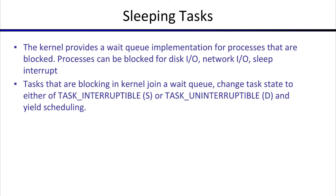You need to change your task state to task_interruptible or task_uninterruptible, depending on whether you're going into interruptible sleep or uninterruptible sleep. You also need to yield your scheduling at that point, and that'll take you out of the run queue and put you on a wait queue. So how do wait queues look like? Let's go through some examples.